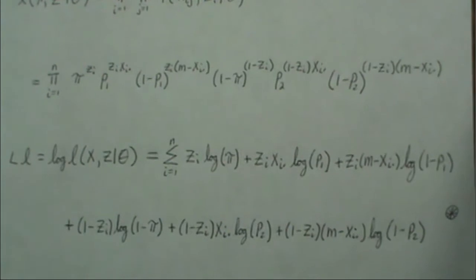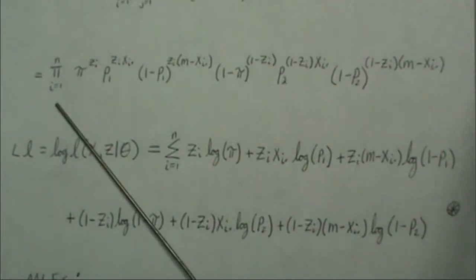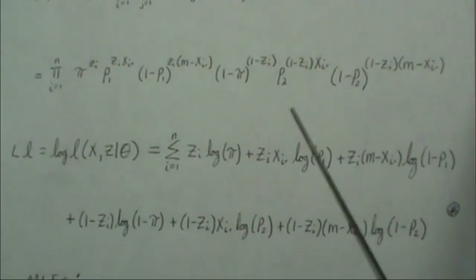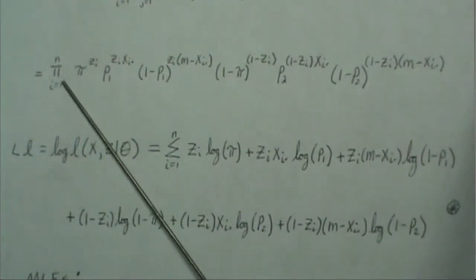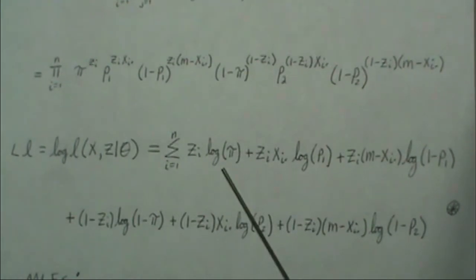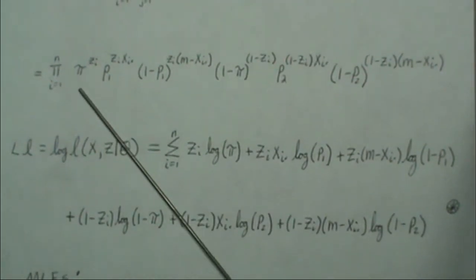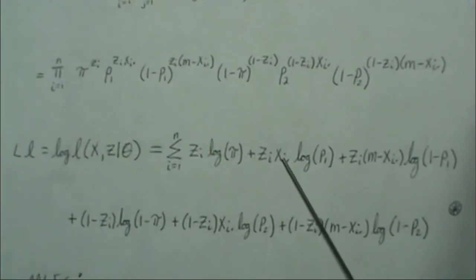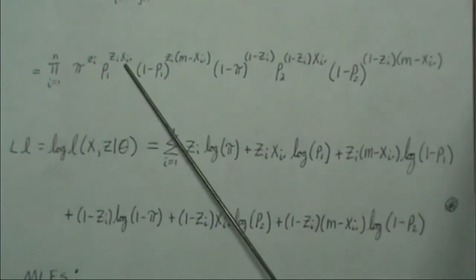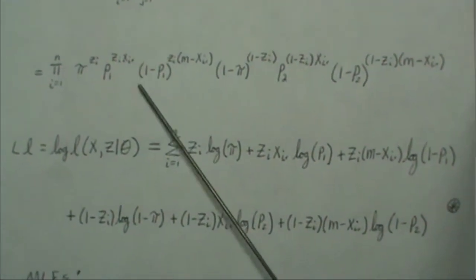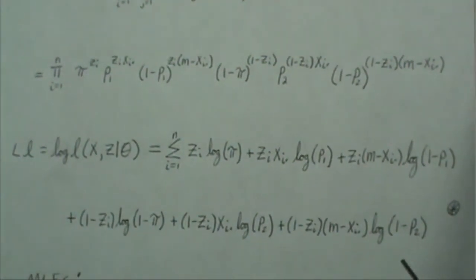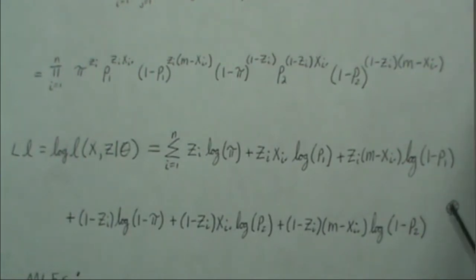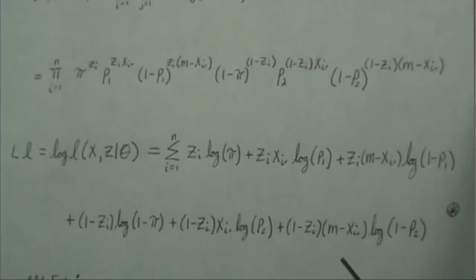Since the likelihood is a product, the log-likelihood becomes a sum, and all the exponents come out front. We get terms like Z_i * X_i-dot * log(P1) and similar terms for each parameter. I have an asterisk here because we're going to come back to this — this is the likelihood, and later we'll take an expectation over the missing values density.